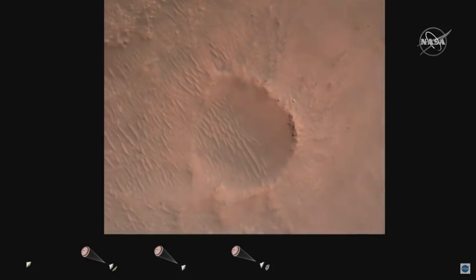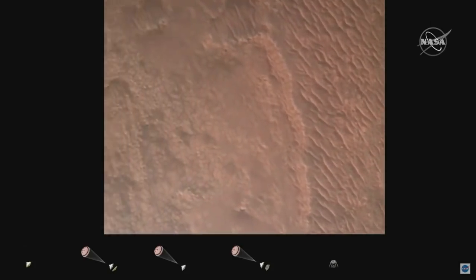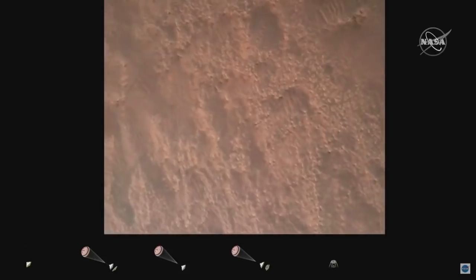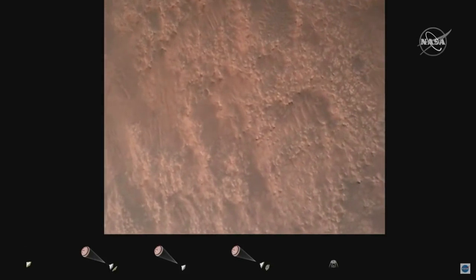We are currently performing the divert maneuver. Current velocity is about 75 meters per second at an altitude of about a kilometer off the surface of Mars. We have completed our terrain relative navigation.